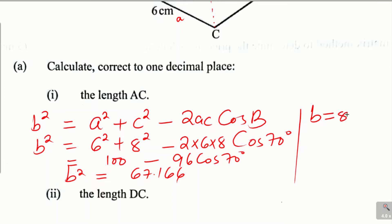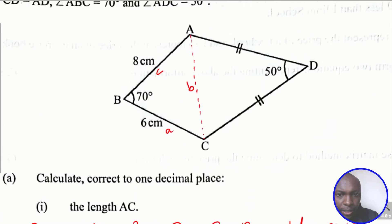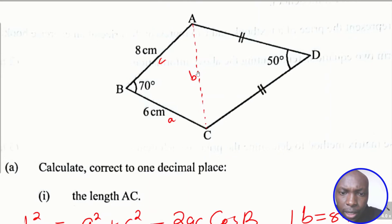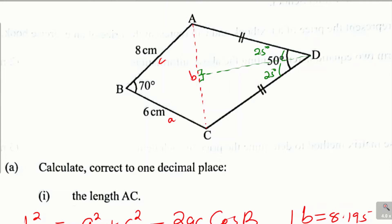The square root gives b equals 8.195, and correct to one decimal place, the length of AC is 8.2 centimeters. Moving to the second part, the length DC — triangle ADC is an isosceles triangle. Drawing a line through the middle divides angle ADC into two equal parts of 25 degrees each, forming two right-angled triangles.